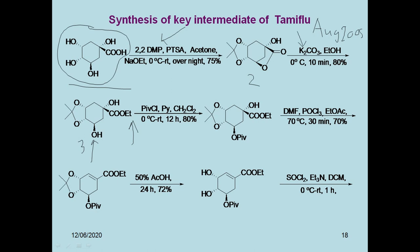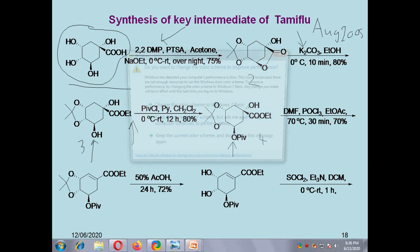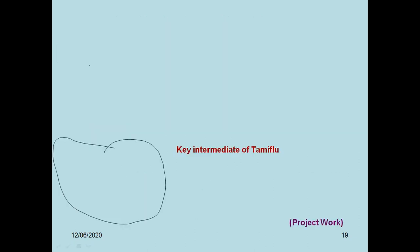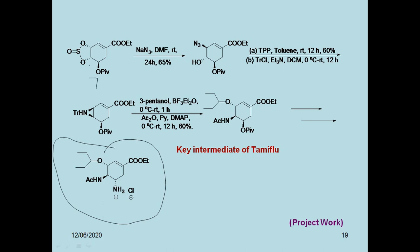Compound 3 is treated with pivaloyl chloride and pyridine, giving pivaloyl protection at the secondary alcohol position. The secondary alcohol is more reactive than the tertiary alcohol, so the secondary alcohol is protected and the tertiary alcohol remains free (compound 4). Compound 4 is treated with DMF and POCl₃ — the OH forms a leaving group, and under heating you get compound 5 with a double bond. Compound 5 is treated with 50% acetic acid to remove the acetonide, giving diol compound 6, which is then treated with thionyl chloride to give cyclic sulfite compound 7.